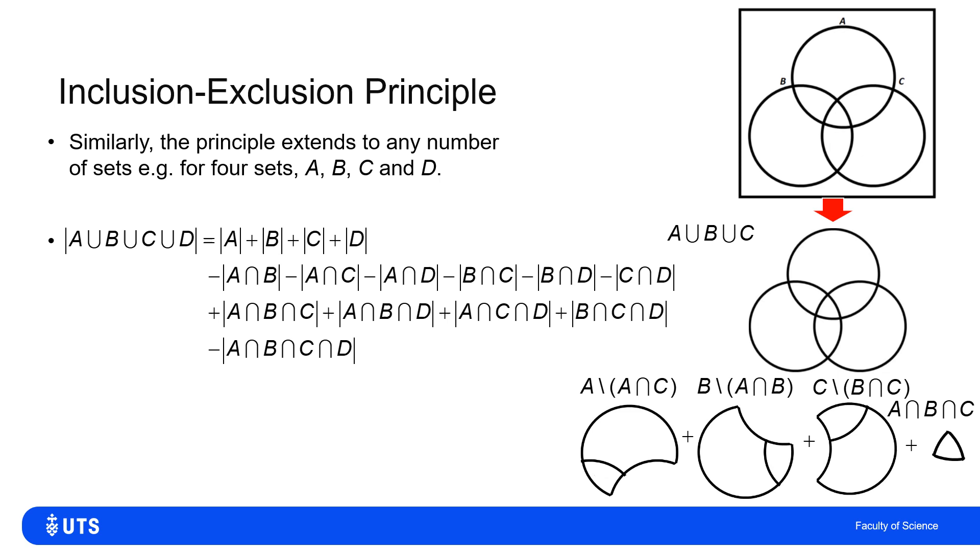But if I wanted to know how many elements are in A or B or C or D, I'd add up the sizes of the four sets, then I would subtract all of the double counts. But then I'd have to add back in all of the triple counts, but then I'd have to subtract the four-fold count.